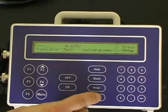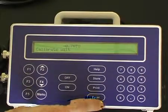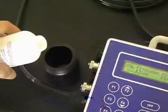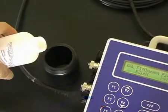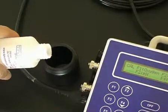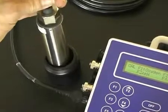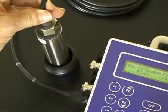The second point turbidity calibration is performed in a turbidity standard, such as 90 NTU like this one here. Pour the standard into a black calibration jar. Place the sensor into the turbidity calibration solution.